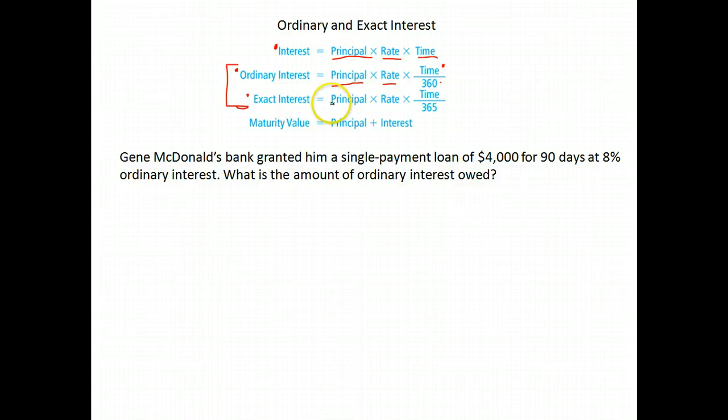Exact interest talks about exactly 365 days in a year, so it's principal times rate. The time, again, that's your number of days here out of 365 because there's 365 days in a year. So these are two separate equations and we'll give you two separate answers.